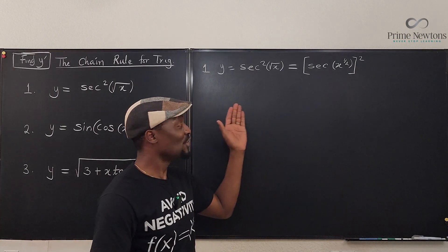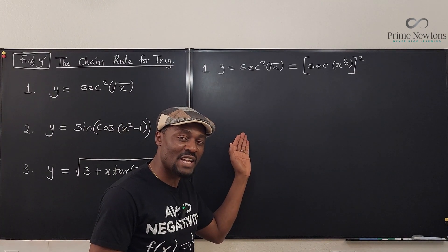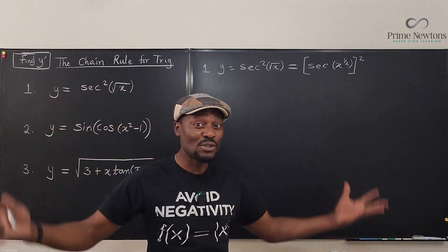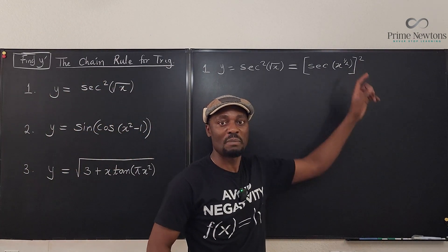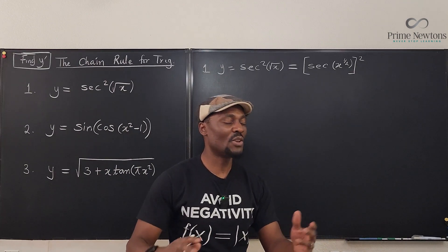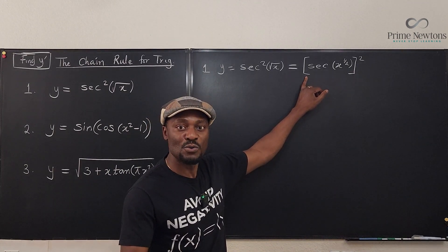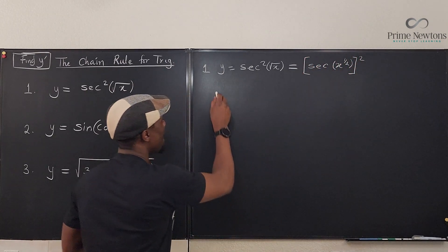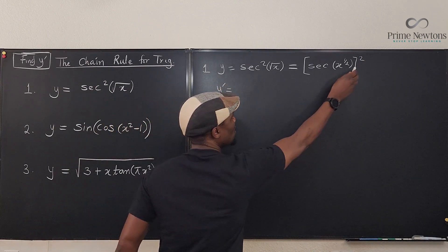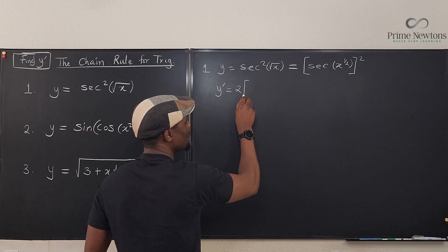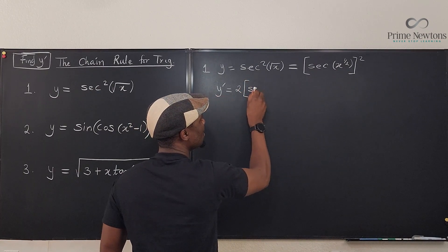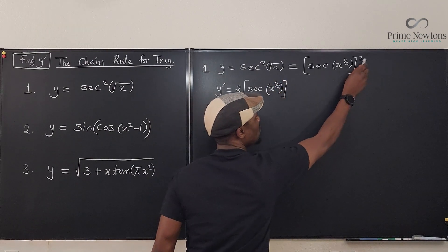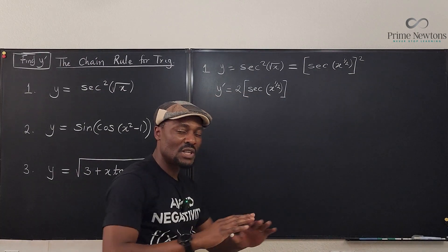The thing about the chain rule is that if you start from the outside and gradually keep going inside, you will never be wrong. So let's start from the outside. The outermost thing you can see is this exponent. Apply the power rule of differentiation — you bring down the two and subtract one. So y prime is going to be two times secant of x to the one half, raised to power one.